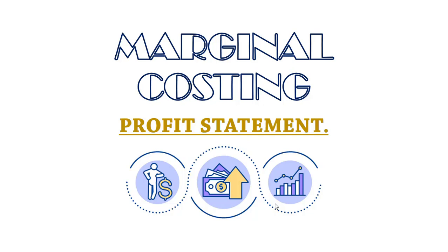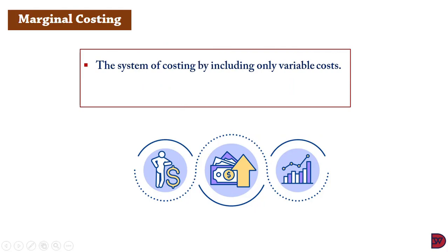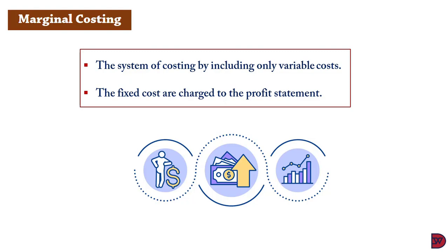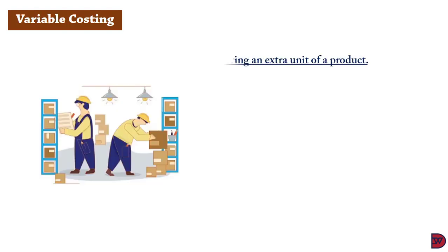Marginal costing profit statements. We've already spoken about absorption costing, where every cost or expense incurred by the business is spread over a unit of the product or a job service being rendered. With marginal costing, we look at a system whereby we only charge the variable cost to the product, meaning the fixed cost will be charged in totality to the profit statement, unlike absorption costing where fixed overheads are apportioned onto the quantity of products manufactured.